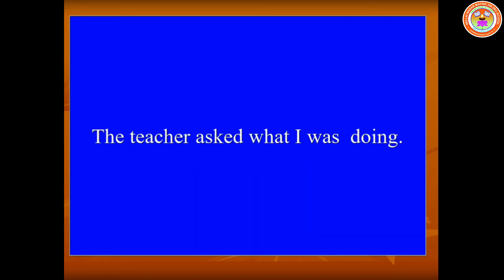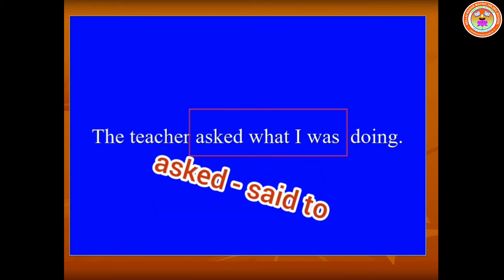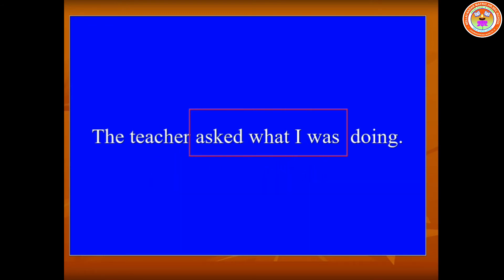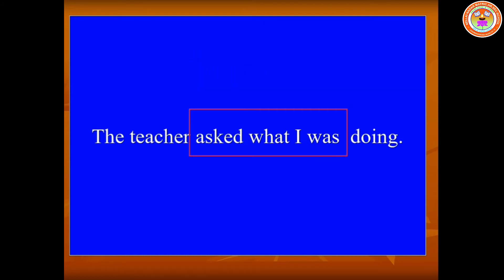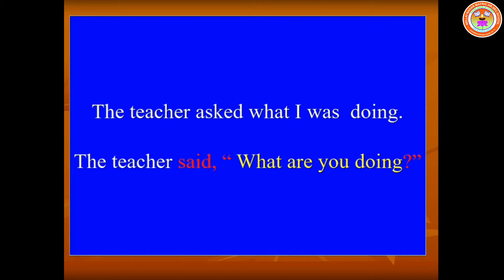Next one: 'The teacher asked what I was doing.' Dear children, guess what kind of sentence it is. Yes, correct - this is a WH type of question; we can understand from the question word 'what'. We have to change 'asked' into 'said to' and should not add any conjunction. The WH question word 'what' should be written, and the pronoun 'I' should be changed as 'you', and the verb 'was' should be changed as 'are'. The answer is: The teacher said, 'What are you doing?' Remember, 'W' should be in capital letter and we have to put a question mark at the end.